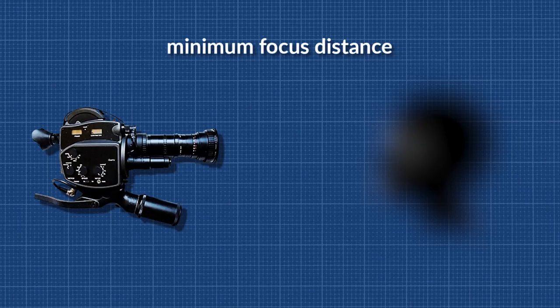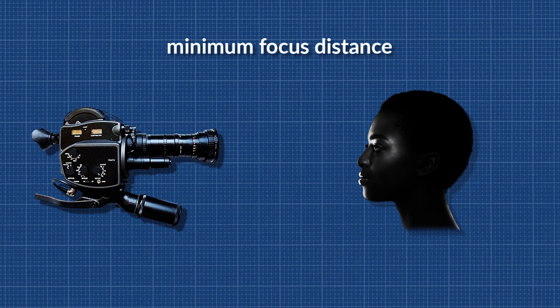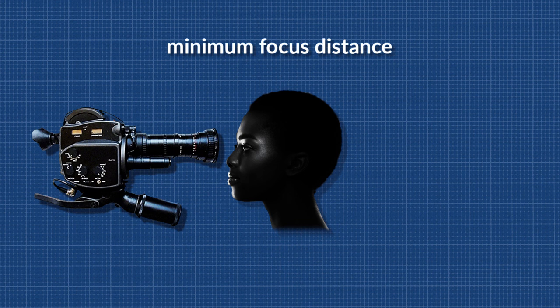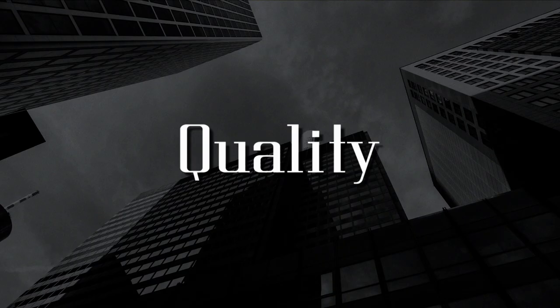Minimum focus distance is also important. It means how close you can get to a subject and still have it in focus. Being able to get really close to a subject, just inches away or even touching it, is called macro.